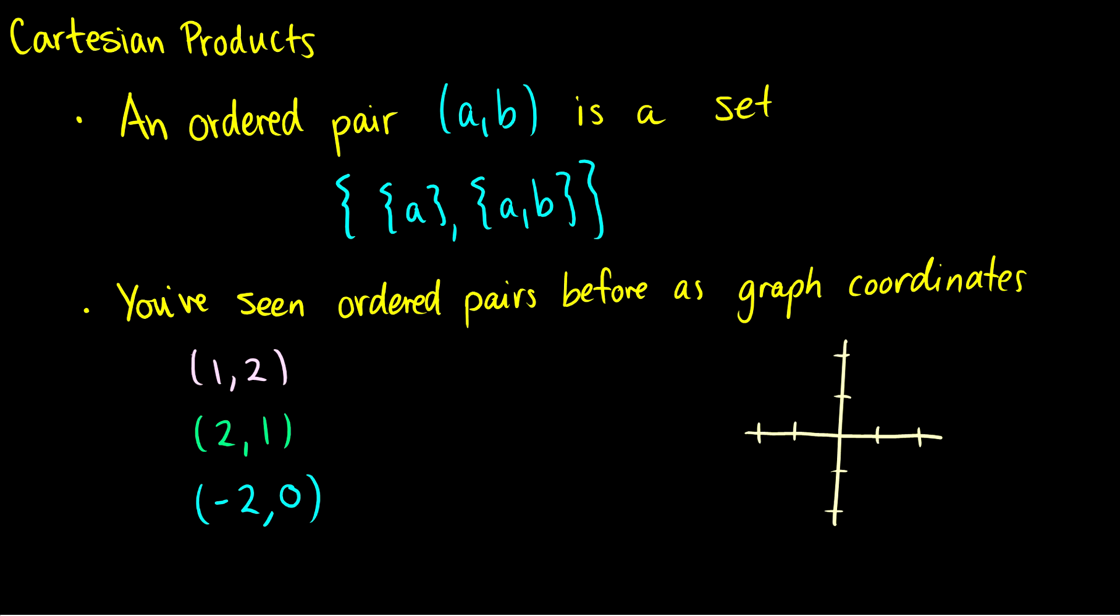An ordered pair (a,b) is a set that contains the first element as a singleton in that set, and then both elements as a set in that set. Now this is a definition you would use in later courses for proofs, but I don't want to focus on that right now.